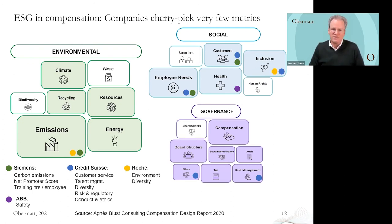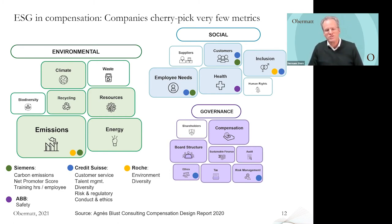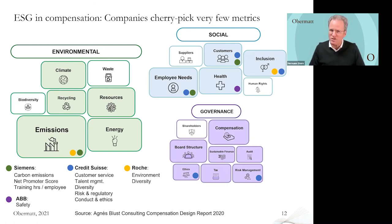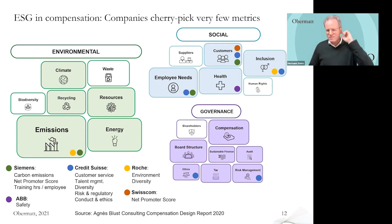ABB just uses safety. Credit Suisse has a strong focus on governance and social issues - customer service, talent management, diversity - a little more, but still only a part of the whole category. Roche focuses on the environment and diversity, but not on health or customer health, which might be interesting. Again, a company not using anything representative of their full priorities. Swisscom has reduced their ESG-related metric to just the net promoter score.